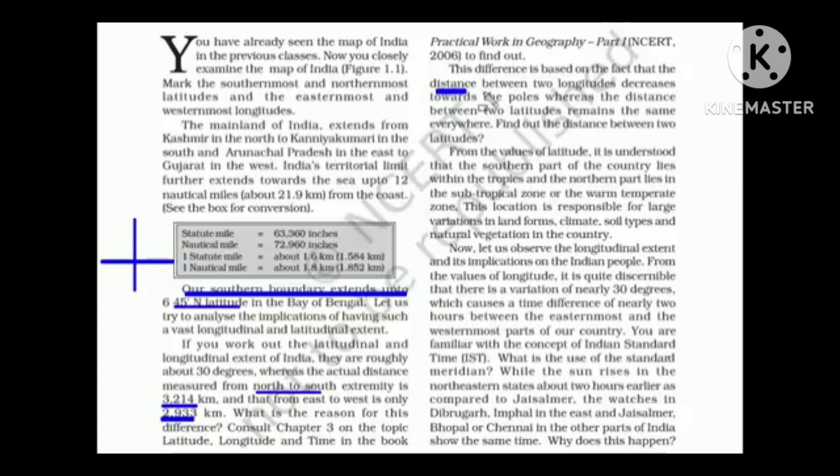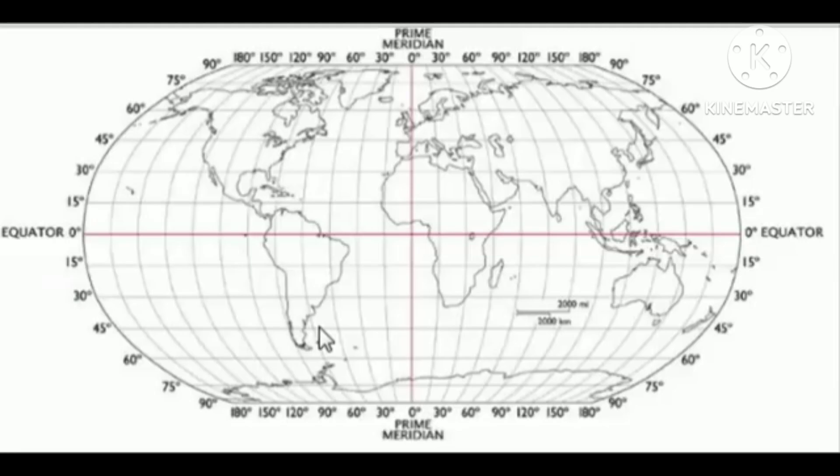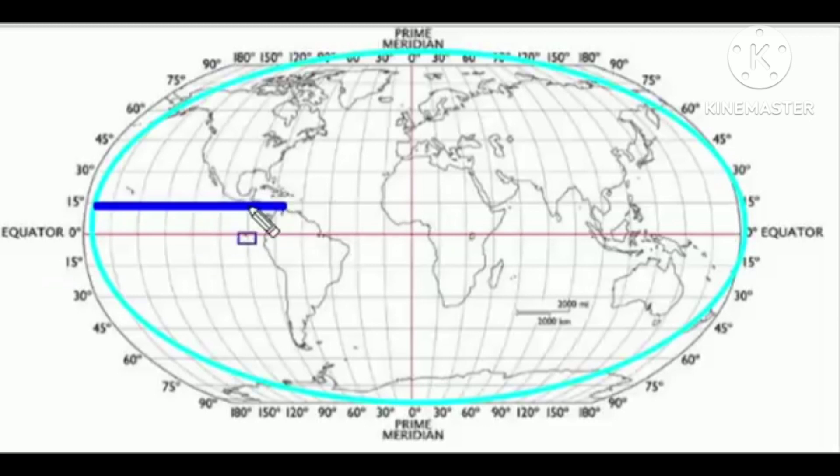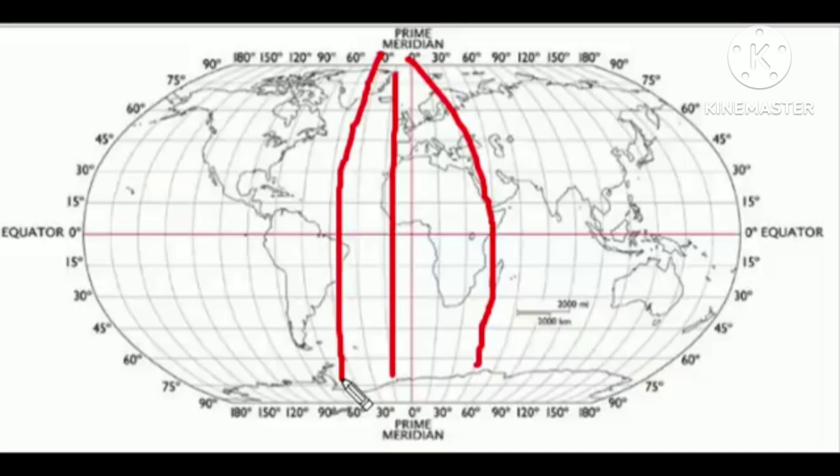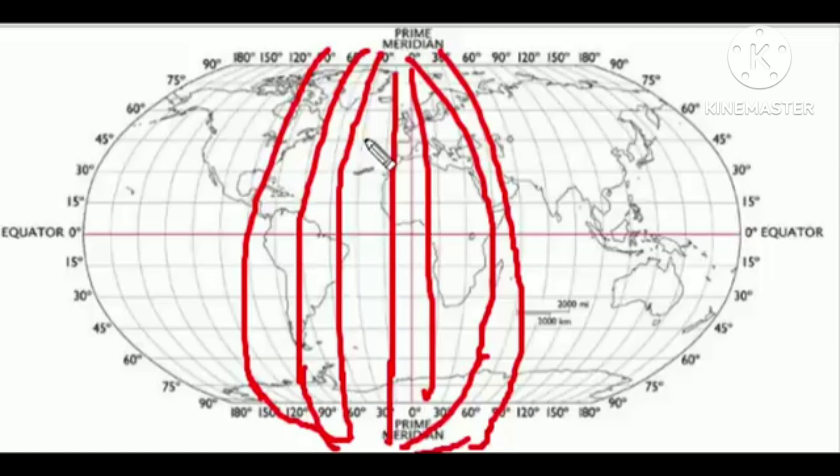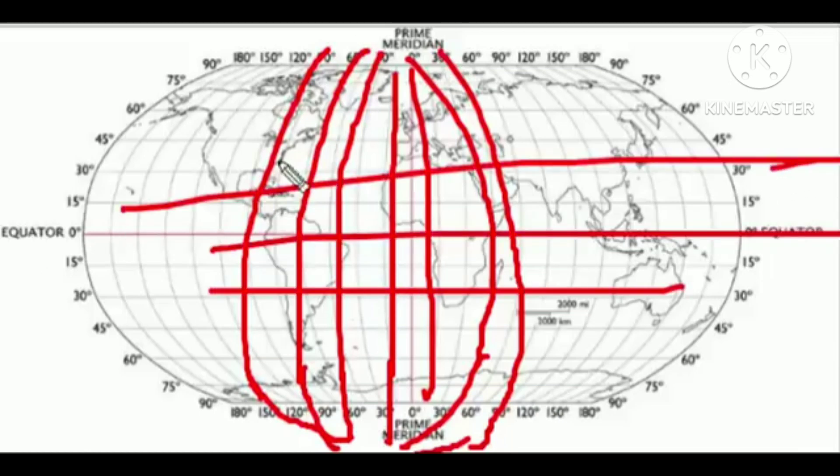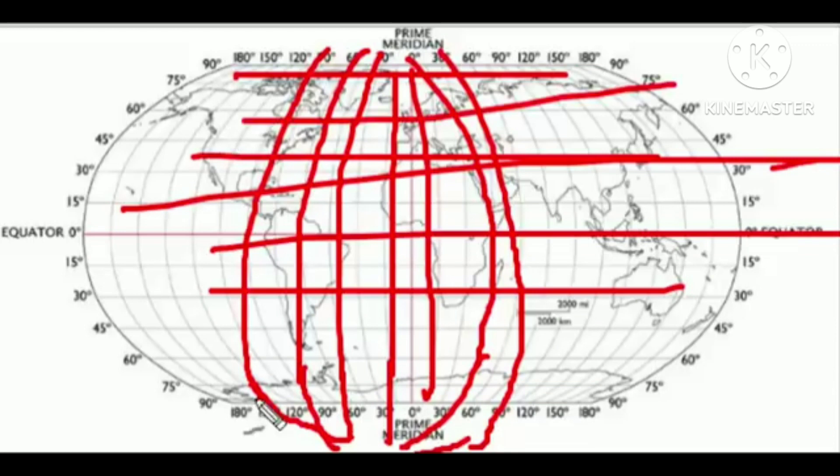Another noteworthy point is distance between two longitudes decreases towards the poles and the distance between two latitudes remains the same everywhere. So if this is the world map, the horizontal line is the latitude and the vertical line is the longitude. Just think about how the longitude is coming closer near the poles. The longitudes come nearer to the pole whereas the latitudes remain parallel everywhere and this is due to the shape of the globe.